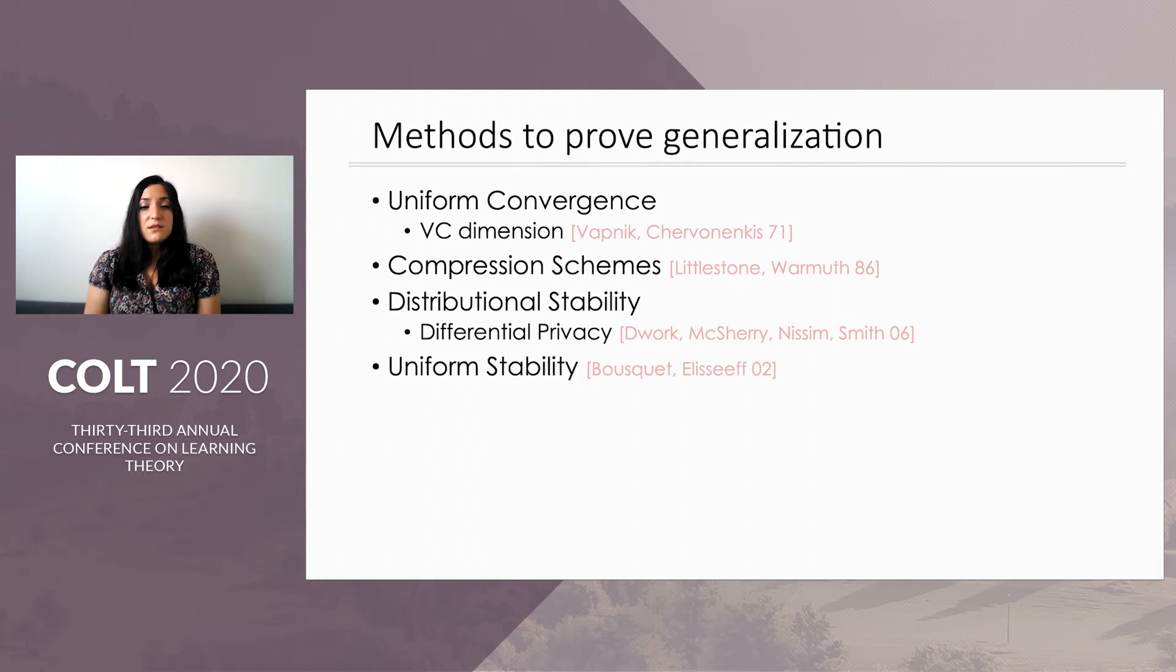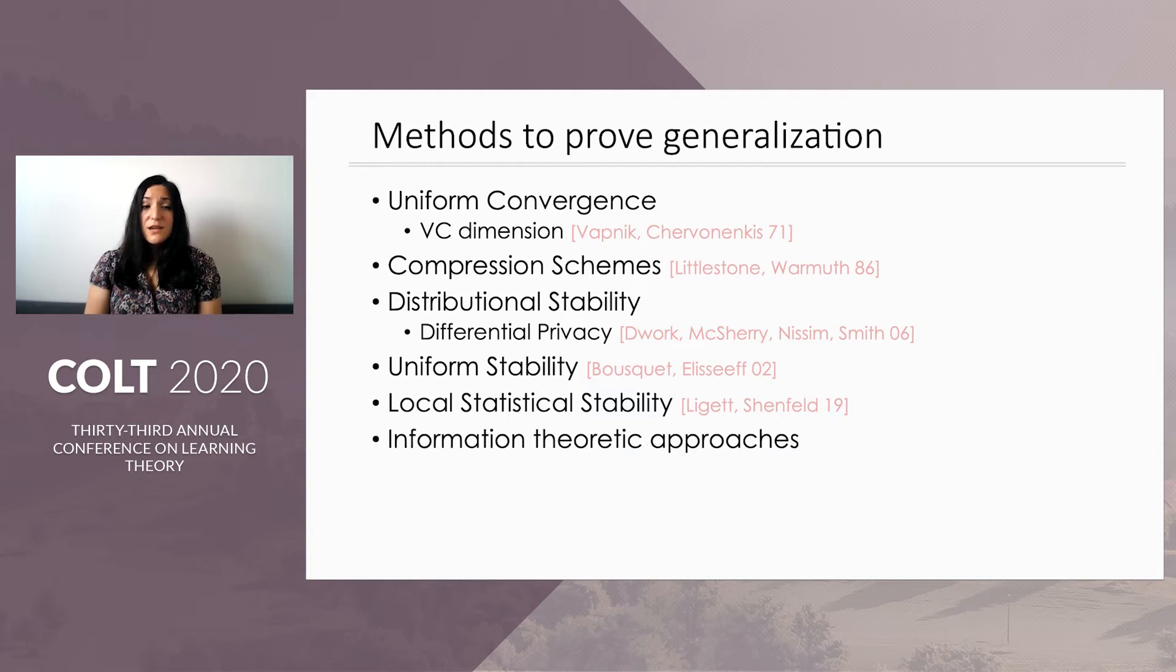Then there's the well-developed theory of uniform stability, which imposes a condition on the loss function and entails strong generalization guarantees. And the more recent loss statistical stability, which is also a loss-based condition. Now last but not least, we have information-theoretic approaches, and this is ultimately what our paper extends, and I'm going to talk about this in the next slide.